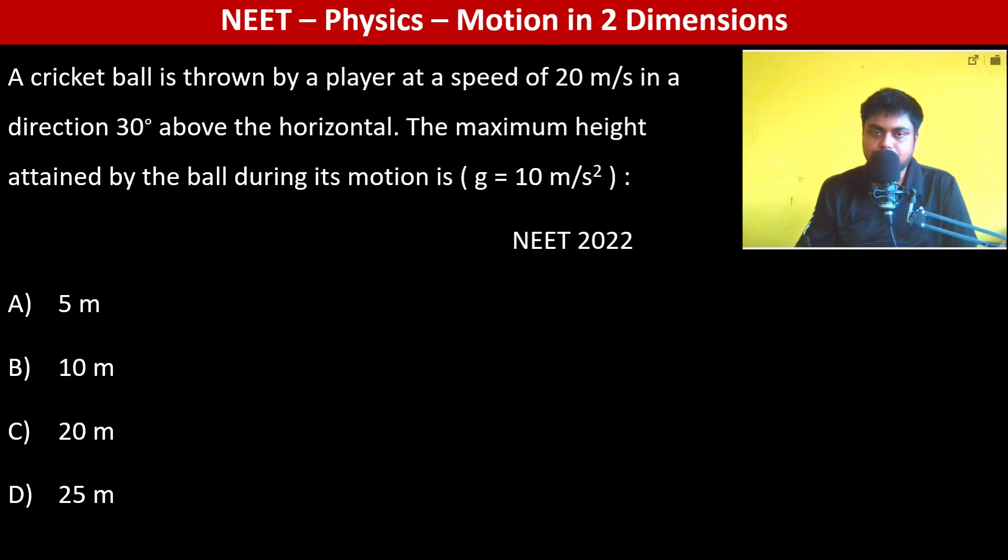A cricket ball is thrown by a player at a speed of 20 meter per second in a direction 30 degrees above the horizontal. So this is 30 degrees above the horizontal and the speed is 20 meter per second.